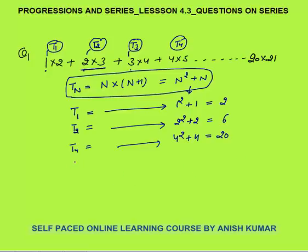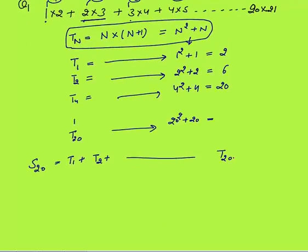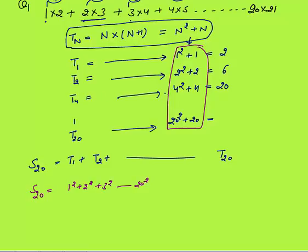We need to find the sum of 20 terms. The sum S₂₀ = t₁ + t₂ + ... + t₂₀. Adding all these terms, we get S₂₀ = (1² + 2² + 3² + ... + 20²) + (1 + 2 + 3 + ... + 20).